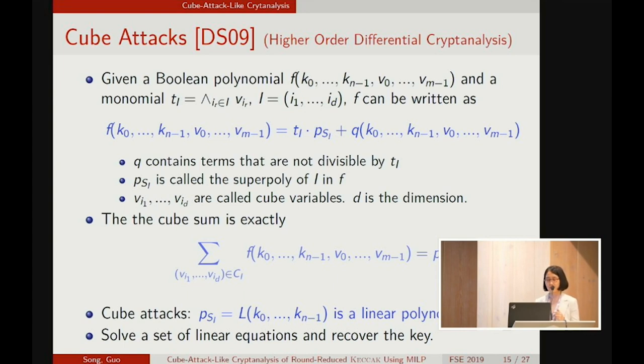In KECCAK, the output bit can be regarded as a boolean polynomial on secret variables k and public variables v. Given the monomial ti, which is a product of the public variables specified by Ii, then the boolean polynomial can be written as two parts. The first part contains terms that are divisible by the monomial.